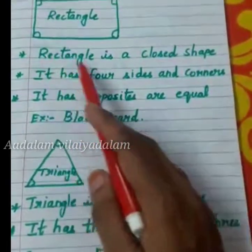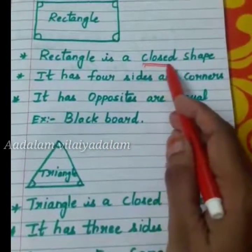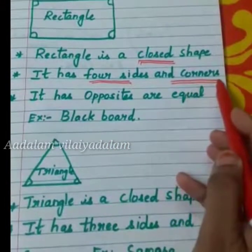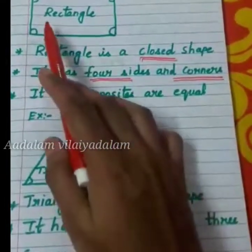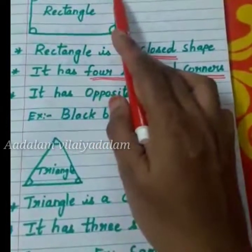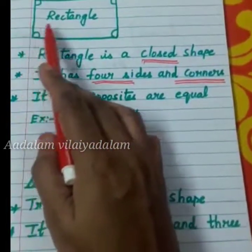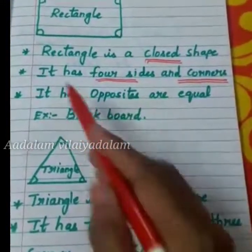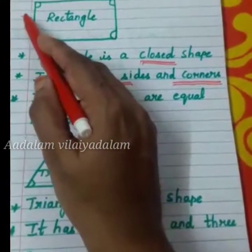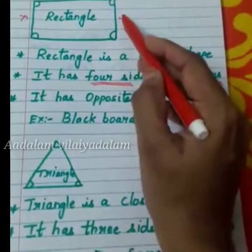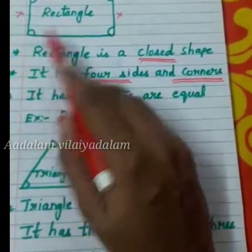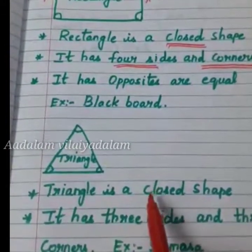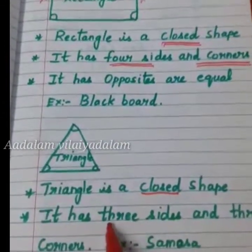Rectangle. A rectangle is also a closed shape. It has four sides and four corners — one, two, three, four. A rectangle has opposite sides that are equal. See, these two opposite sides are equal.